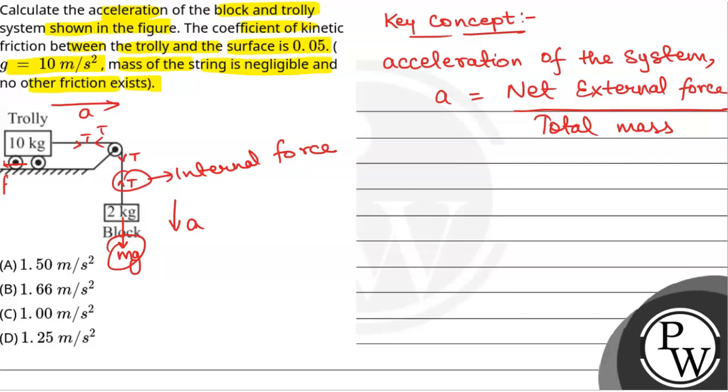Now friction on the trolley, F will be equal to mu into n and for trolley on the trolley will be equal to weight of trolley, that is 10g. So friction on the trolley will be equal to mu, mu is given at 0.05, so 0.05 into 10g, that is 10 into g is also 10 meter per second square. So this is 5 newton. This is the frictional force acting on the trolley. This is the maximum frictional force.